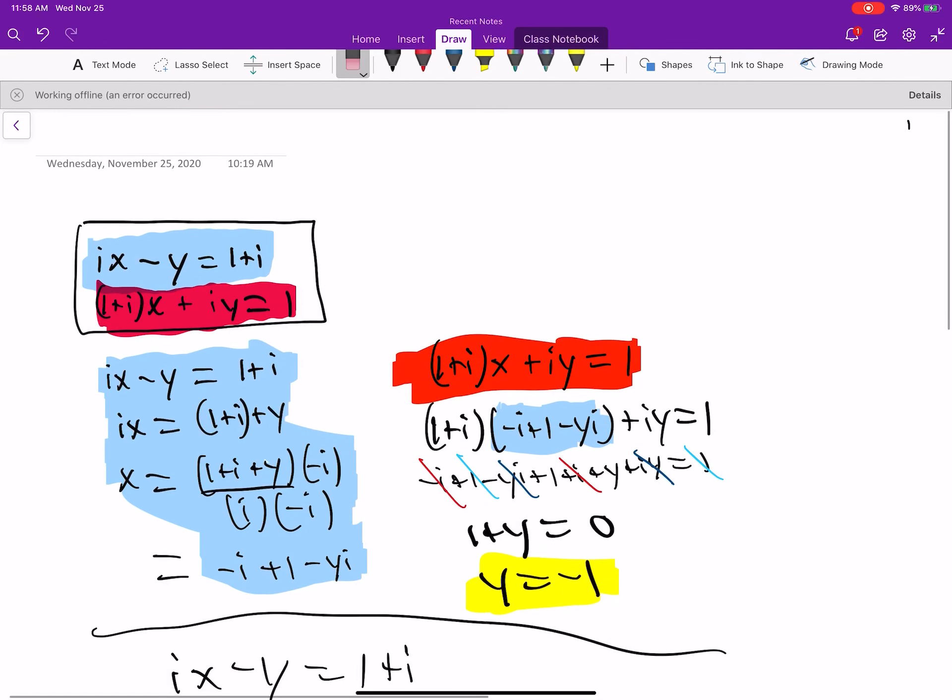Okay, we are looking at 2.1.24. It's a system of equations. I'm going to call it the blue equation and the red equation.